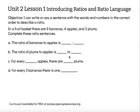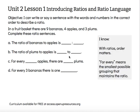In a fruit basket, there are nine bananas, four apples, and three plums. Complete these ratio sentences. Before I get started, I want to remember a few things about ratios: order matters, so the words and numbers have to match in order. The phrase 'for every' means the smallest possible grouping that maintains the same ratio.